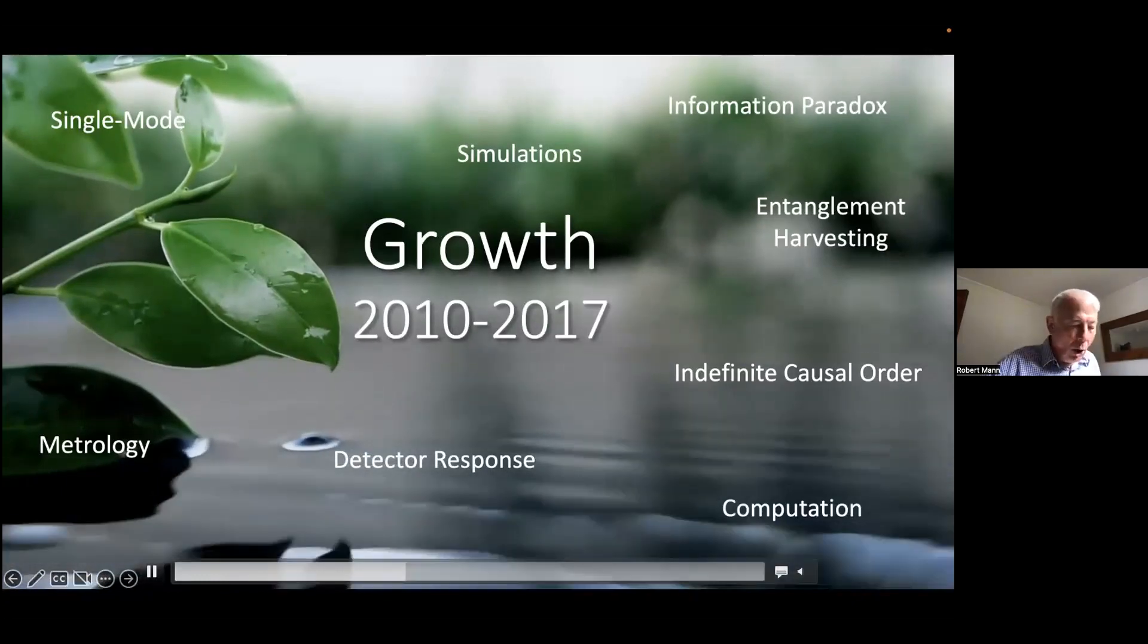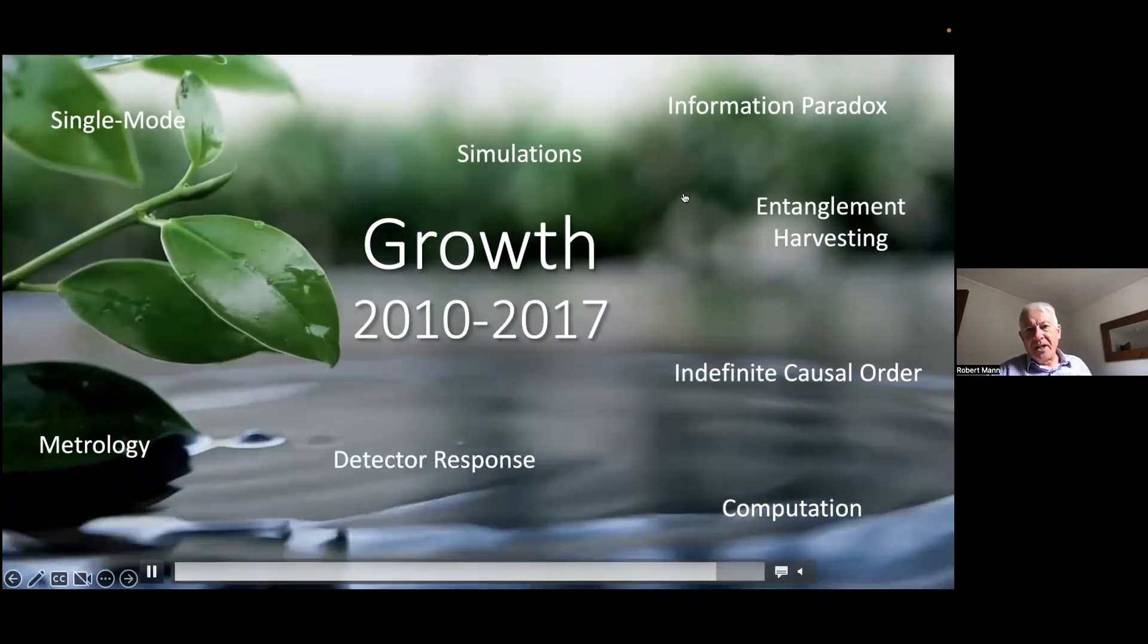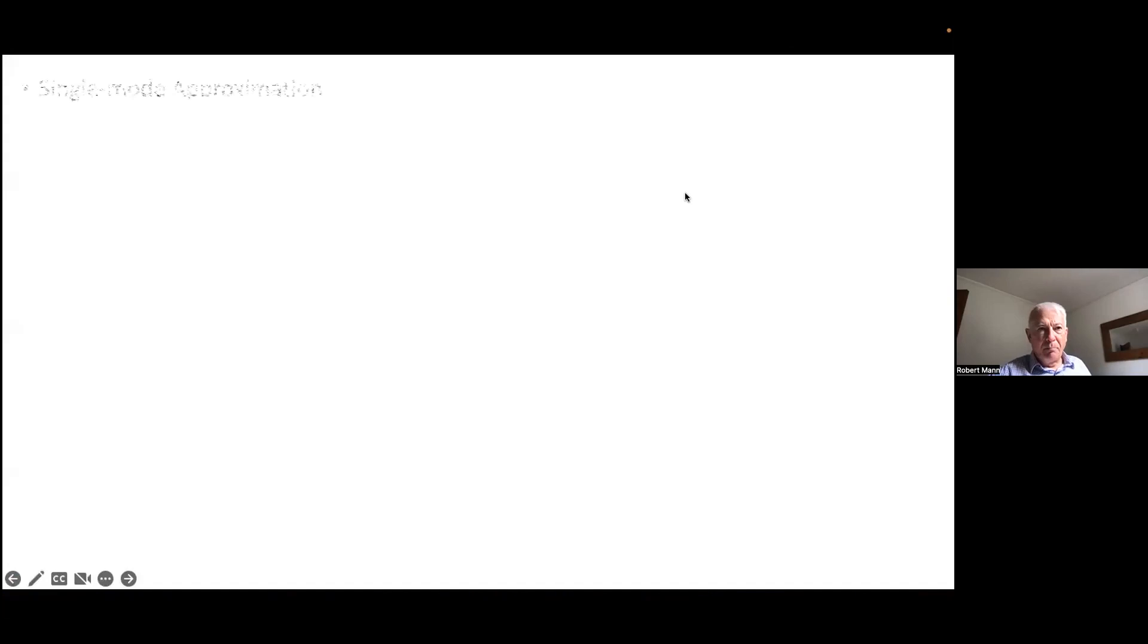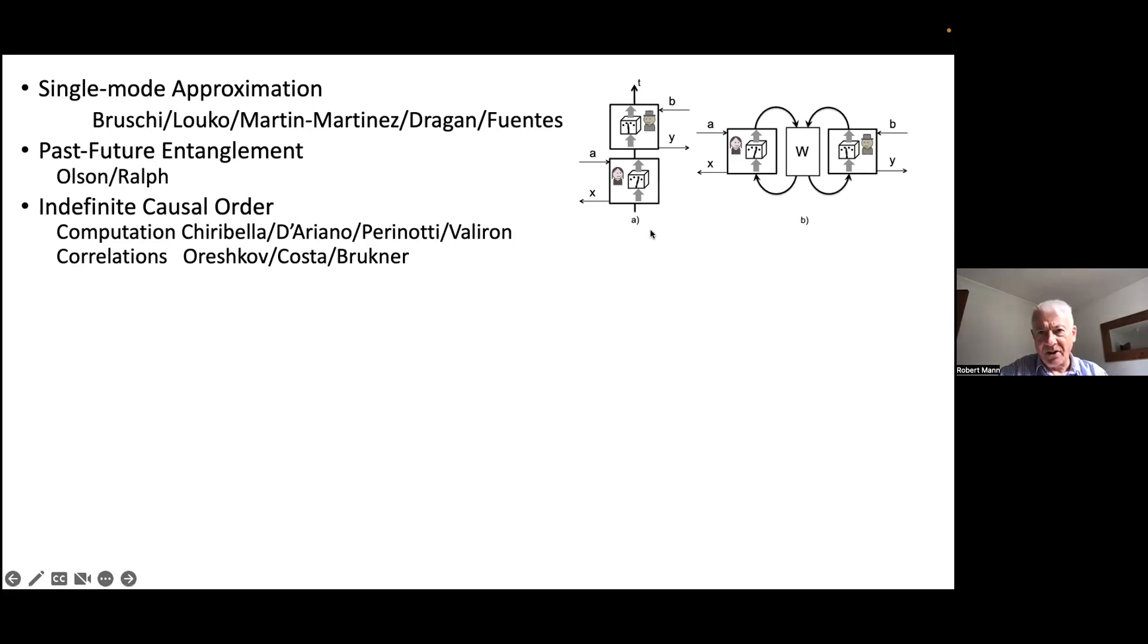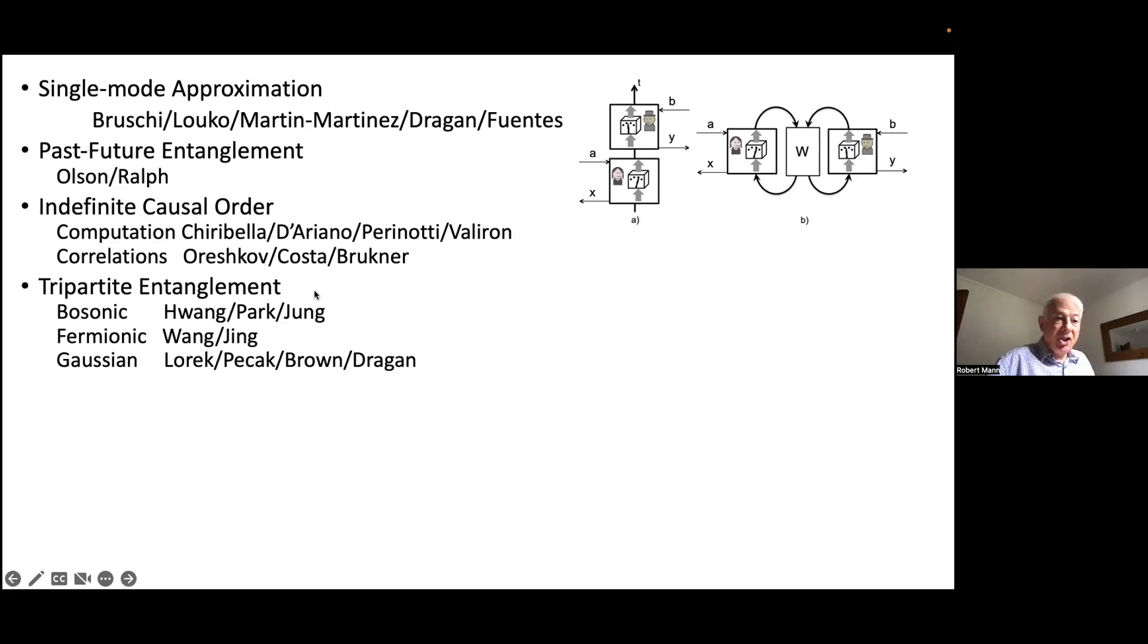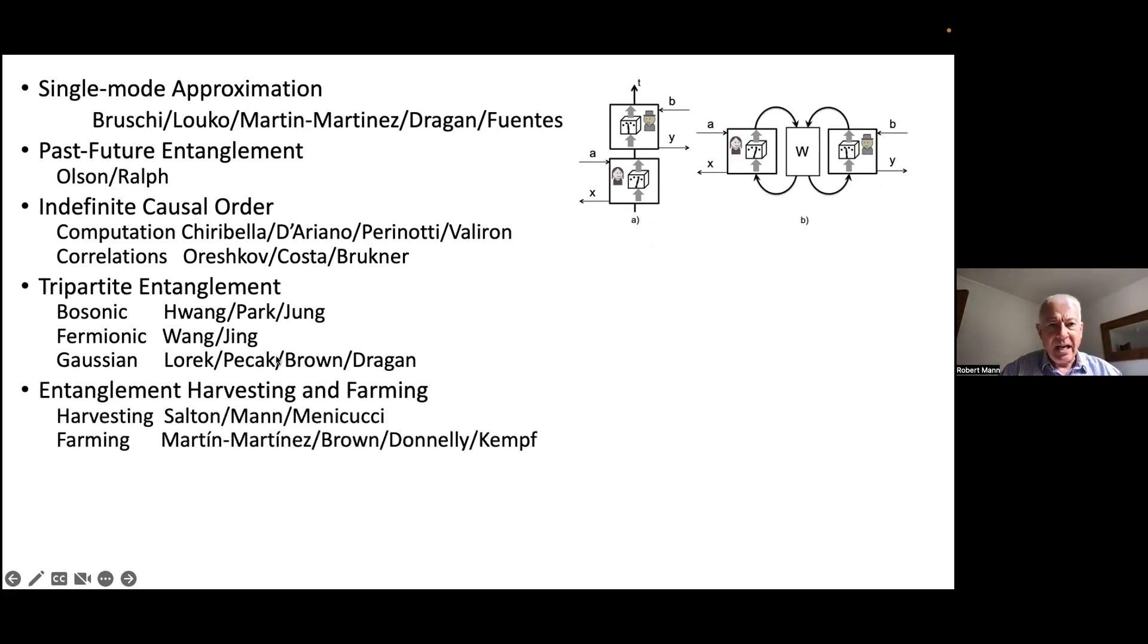Then we entered a growth period where more and more people started working on this subject, doing all kinds of things. Studying more carefully the single mode approximation that was used in previous studies. Olson and Ralph showed you could flip the Unruh effect sideways and get past-future entanglement. Chirabella, Oreshkov, Kostner, and Bruckner began to look at what would happen to quantum computations and quantum correlations if quantum physics gave an indefinite order to spacetime events.